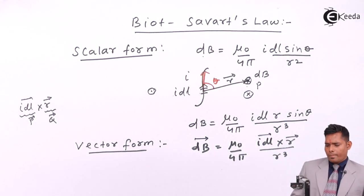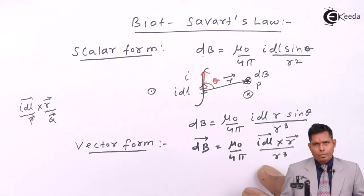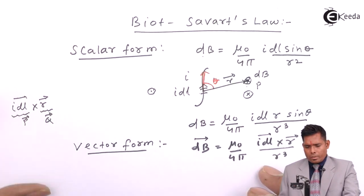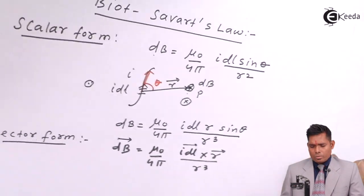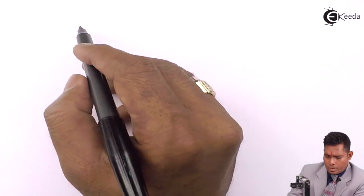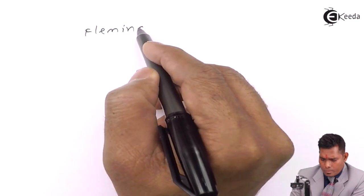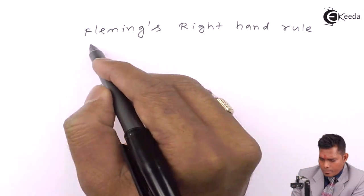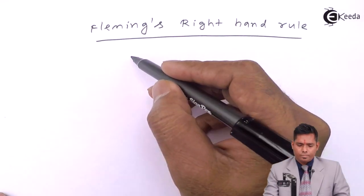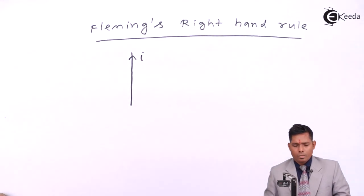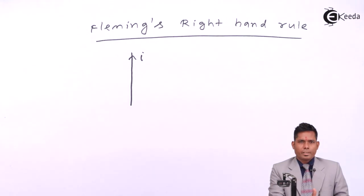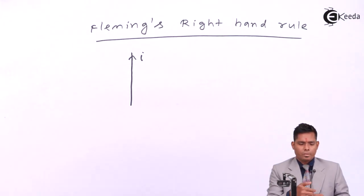This is the vector form. Now I will also mention here: if I have a conductor and the current is flowing like this, then the magnetic field will be around the conductor. If I hold the conductor in my right hand with the thumb in the direction of the current, then the curled fingers will give you the direction of the magnetic field — concentric circles like this.